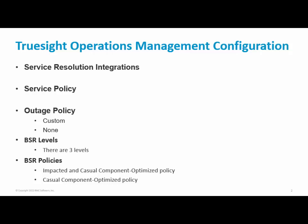There are three BSR levels. Level 1 is Event-based Service Resolution, where event incidents are created without CI information. Level 2 is Infrastructure-based Service Resolution, where incidents are created with CI information. Level 3 is Impact-Model based Service Resolution, where based on policy, a causal incident or causal and impacted incidents with impacted relationships are created.